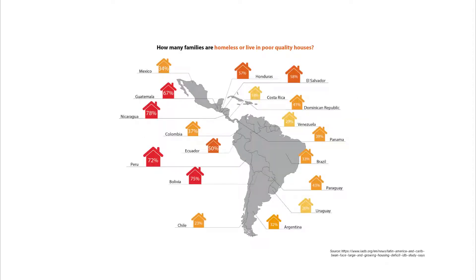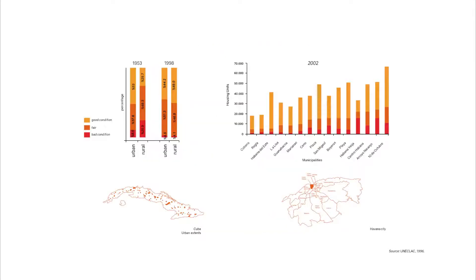Housing in Latin America and the Caribbean exhibits a wide range of different living types as well as various options for owning or renting. Unfortunately, around 54 million families in Latin America and the Caribbean live in substandard accommodation or do not have housing. In Cuba, the housing deficit currently sits at 900,000 units as of 2018, and the rate of housing produced by the government is much lower than the growing number of people needing homes.